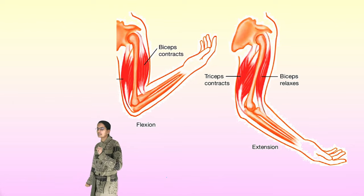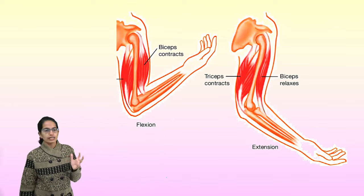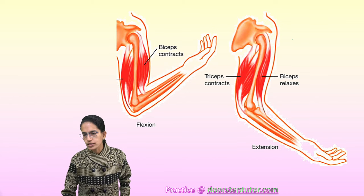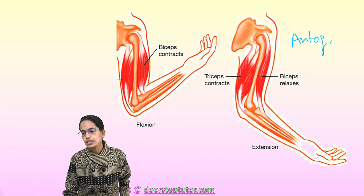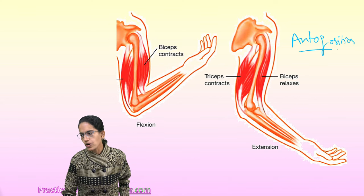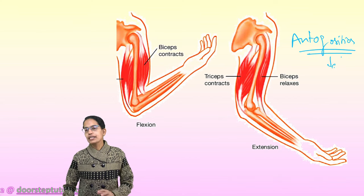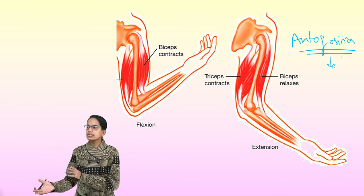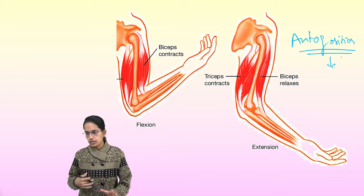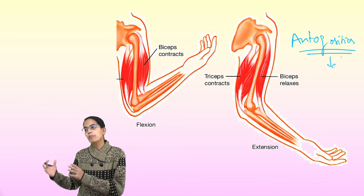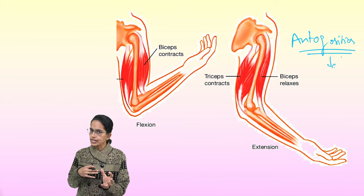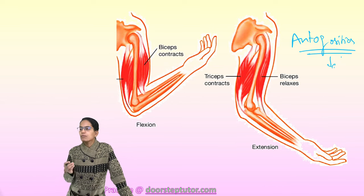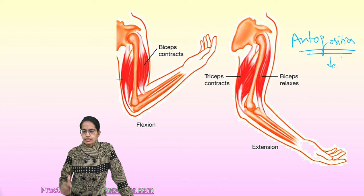These two muscles are antagonistic: when one contracts, the other relaxes, and when one relaxes, the other contracts. This mechanism is called antagonistic muscles. They work in pairs but opposite to one another — if one is contracting the other would relax, and vice versa.